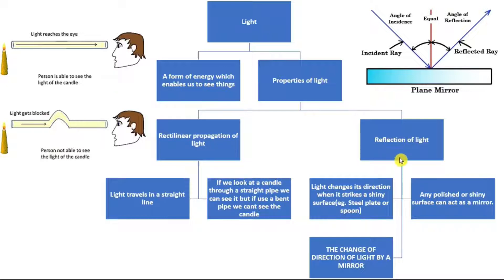Then we have the reflection of light. Light changes its direction when it strikes a shiny surface. So any polished or shiny surface can act as a mirror. Basically light changes its direction when it strikes a mirror. The change of direction of light by a mirror is known as reflection of light. You can use this as the definition of reflection.